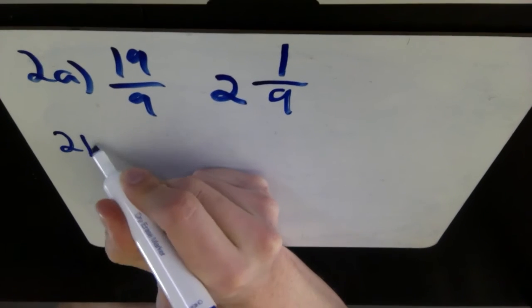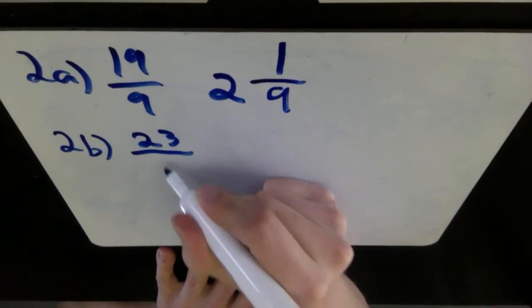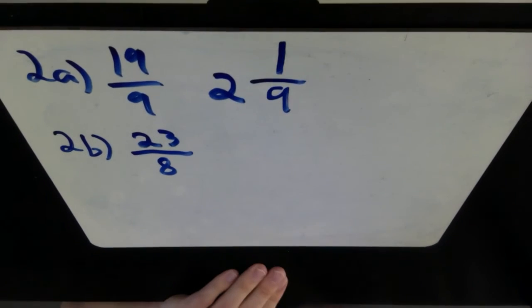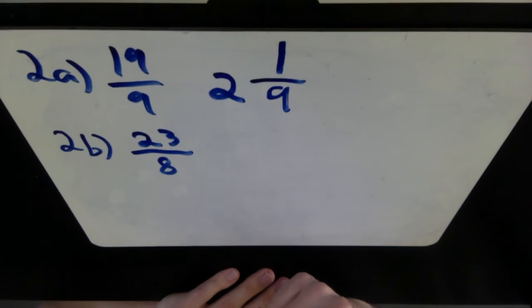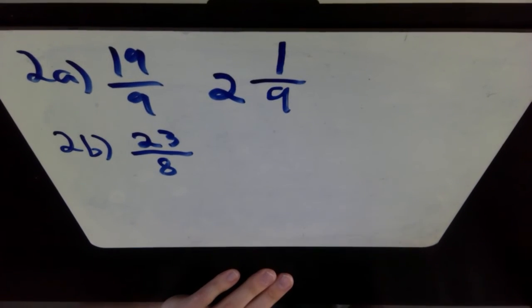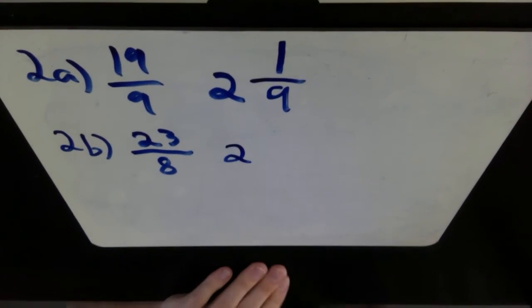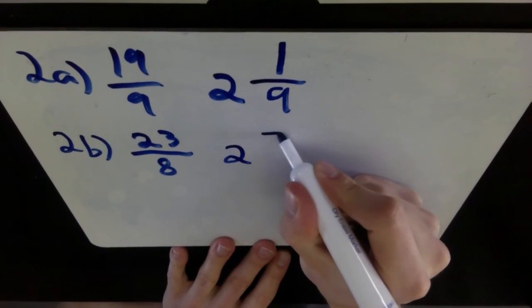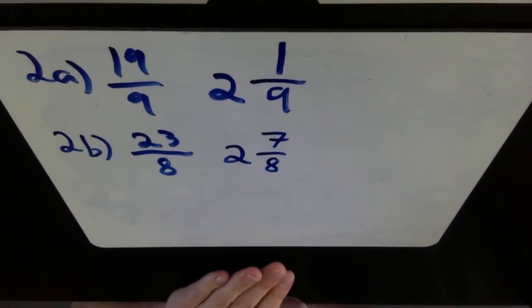2B. We have 23 over 8. Once again, ask yourselves, how many times can 8 go into 23 without going over, without being too many? So counting out by 8s: 8, 16. If we go 24, which would be next in the multiples of 8, that would be too many. So we've got to pause at 16. Think of 8, 16. So that's twice. What's left over between 16 and 23 is 7, and keep your denominator the same as 8. So there's your answer for 2B.